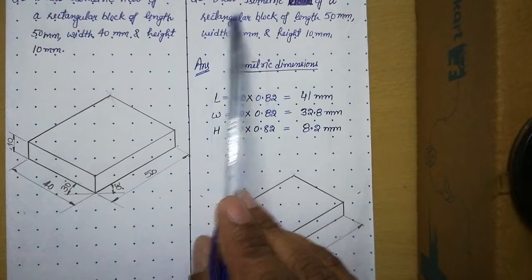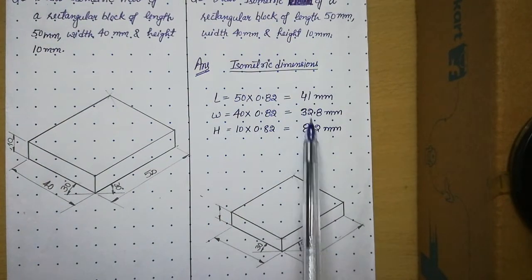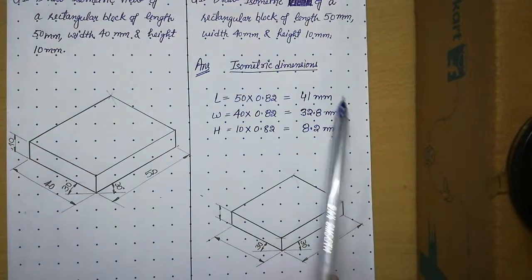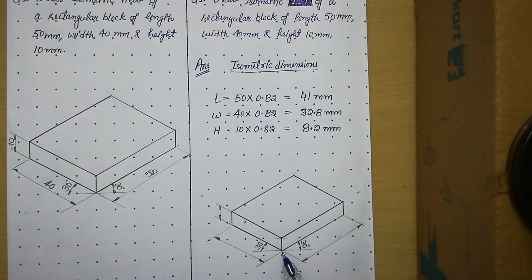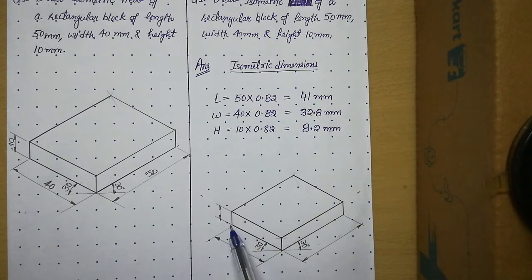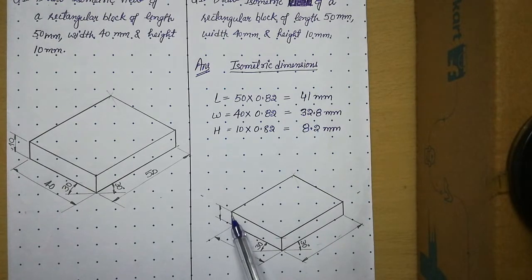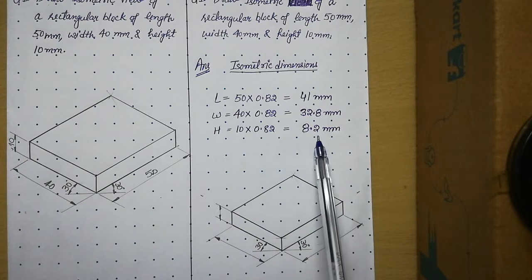Whenever we have to solve any solid under isometric projection, you need to first calculate isometric dimensions by this method. So now when you will draw this length, you will mark this length equal to 41 mm. You will mark this width equal to 32.8, and you will draw this height 8.2 mm.